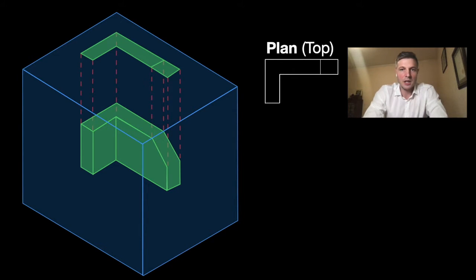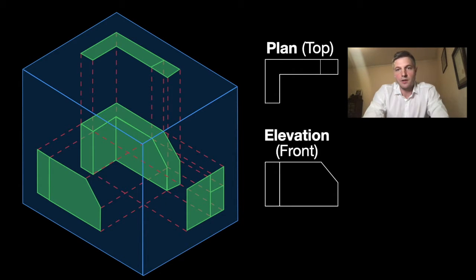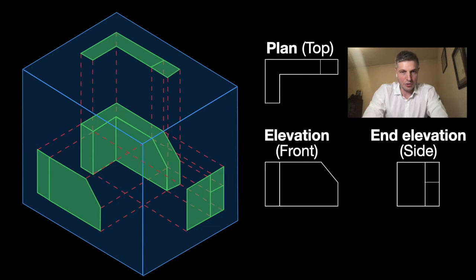This front on view we call the elevation because it shows us that height, that elevation, which we call the front. The final side we'd be looking at here is known as the end elevation, which you could refer to as the side. Technical terms are plan, elevation, and end elevation.